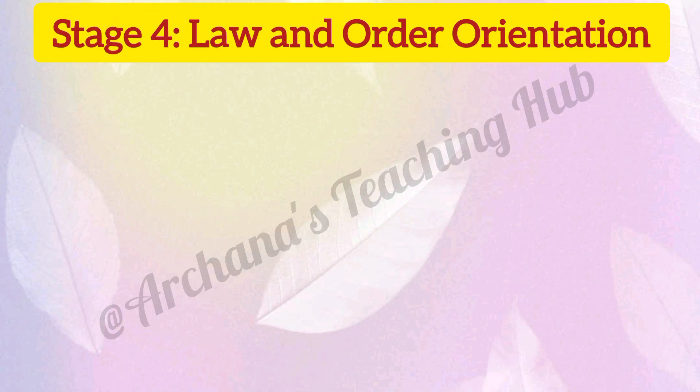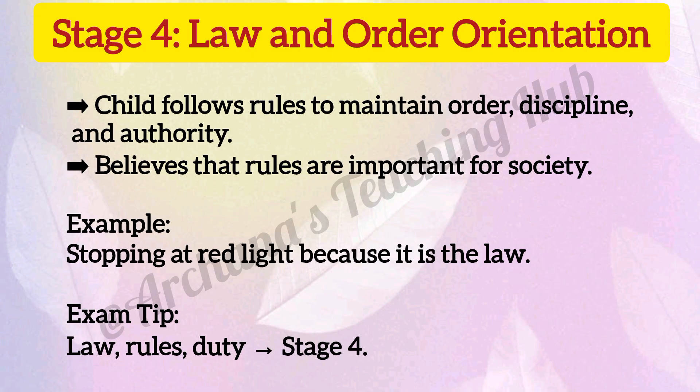Stage 4: Law and order orientation. The child follows rules to maintain order, discipline, and authority. Believes that rules are important for society. For example, stopping at a red light because it is the law. Key idea: law, rules, duty equals Stage 4.